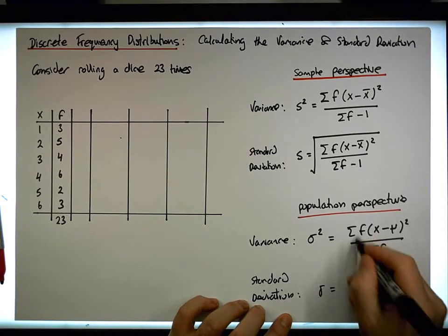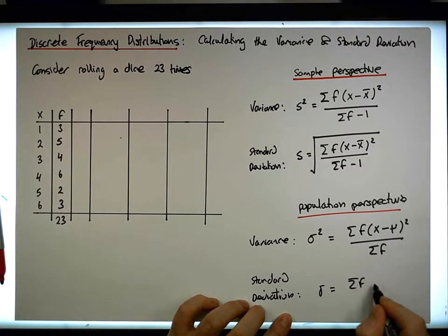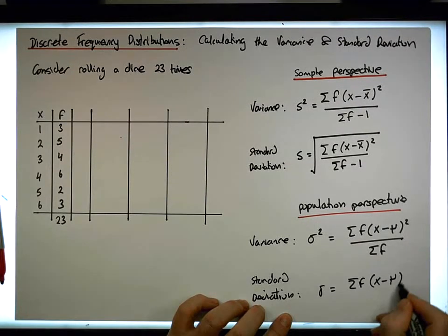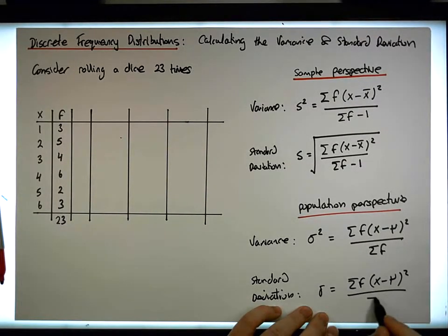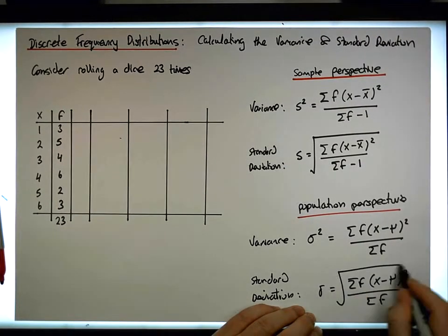Sigma is simply equal to the square root of this. So it's the sum of the f's times the x minus the mu squared divided by the sum of the f's, and it's the square root of that.